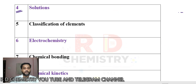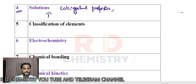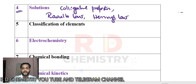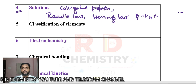On day 4, concentrate on solutions. There are four types of colligative properties — learn how to find their values. For liquid-liquid mixtures, we have Raoult's law. Also important is Henry's law: partial pressure = KH × mole fraction of gas in liquid. Other problems may ask you to calculate molarity, molality, mole fraction, and also remember how to calculate ppm.